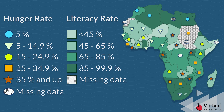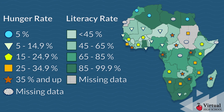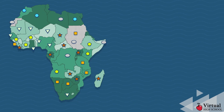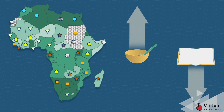Analyze the data for possible connections. Places like Chad and Madagascar have low literacy rates and very high percentages of hunger. Conversely, places like Algeria and Egypt have high literacy rates and low percentages of hunger. After analyzing, evaluate and draw conclusions about the data. These observations indicate that hunger and literacy are connected — as hunger rates increase, literacy rates decrease.